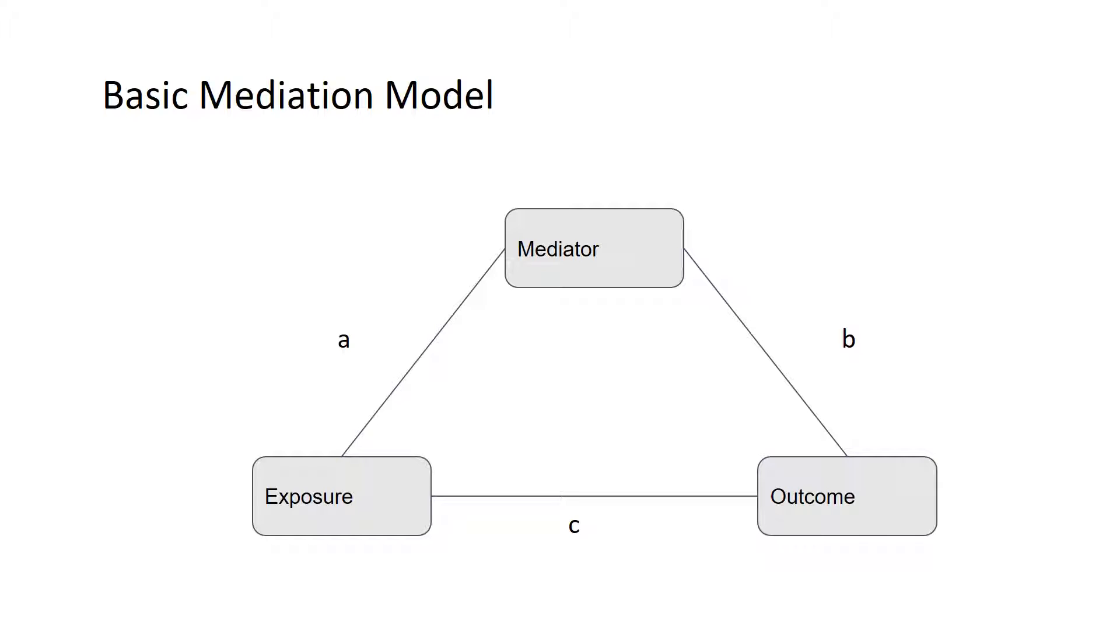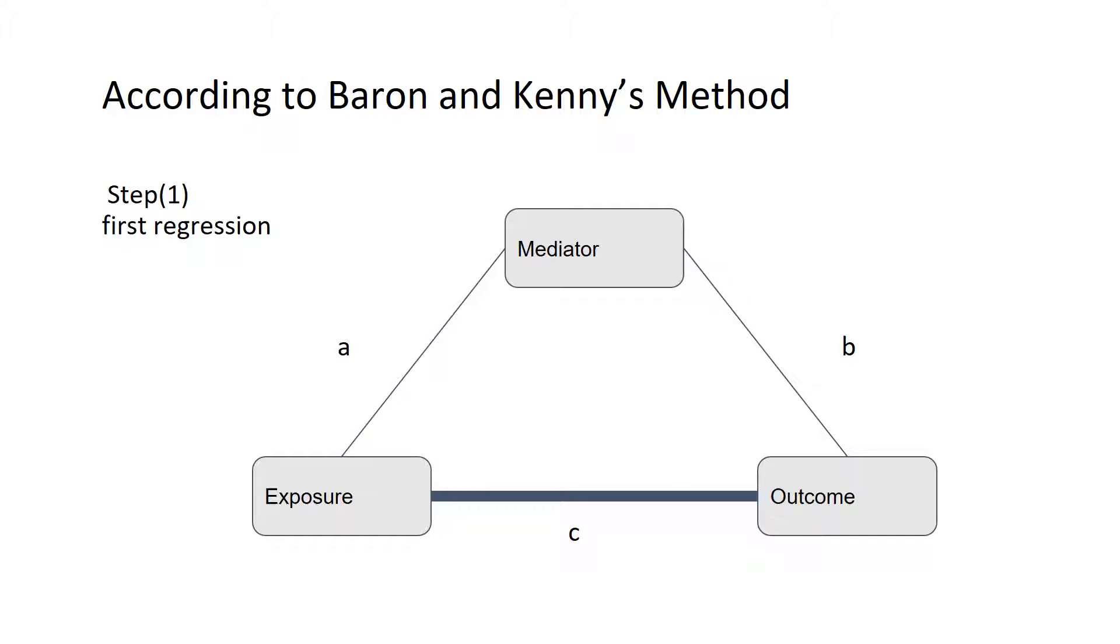Based on Baron and Kenny's 1986 approach, we have to establish four regressions or four associations between these variables in order to say that there is mediation through the mediator variable on the relationship between exposure and outcome. The first step is to establish association between the exposure variable and outcome by regressing outcome on exposure.